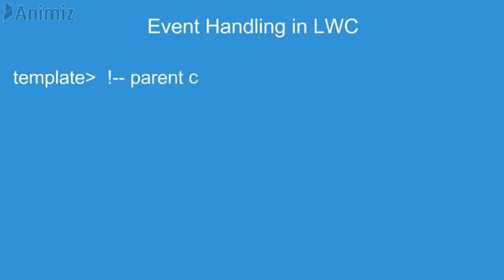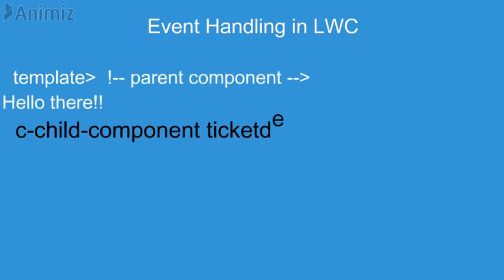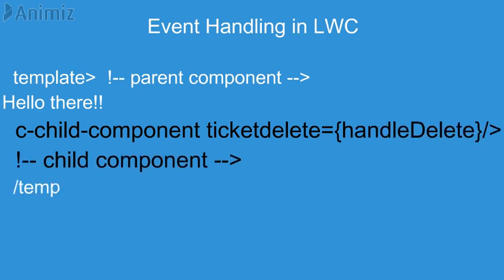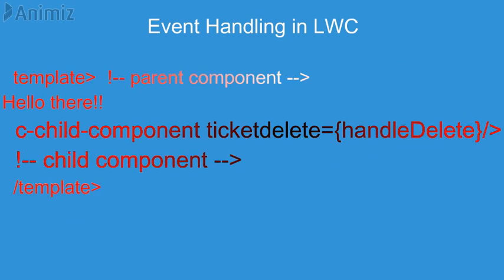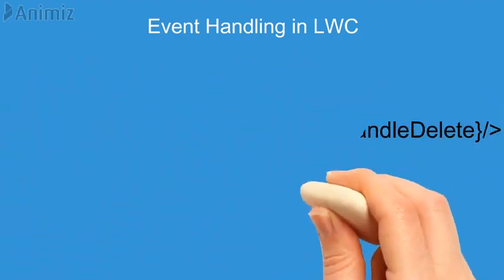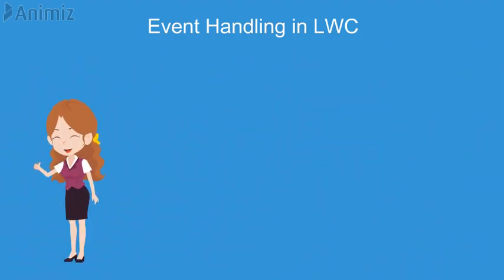The dispatched event is ready to be handled, and here is how we do that. We are talking about propagating an event from a child component to a parent component. The child component included in the parent component has an extra attribute available by the name of the event declared earlier, which is "ticketdelete". We are going to bind this ticketdelete attribute to a JavaScript function like this. The event has been successfully triggered from the child component and handled by the parent component.